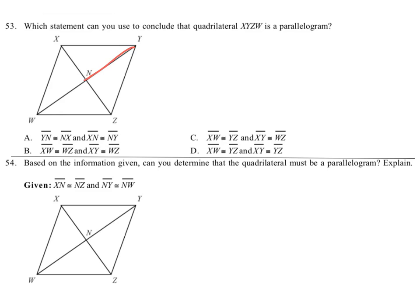YN is congruent to NX. Already, nope, that's not how it works. So I'm going to scrap that one. Okay, what about the next one?